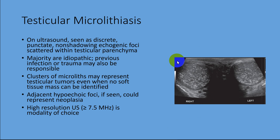As we see here in this ultrasound, the transverse view for both testes — this is the right and this is the left — we see small hyperechoic areas about 1 to 3 mm in both testes, more to the right side in this patient. There is no significant shadowing, so these are ecogenic foci scattered within the testicular parenchyma without shadowing.